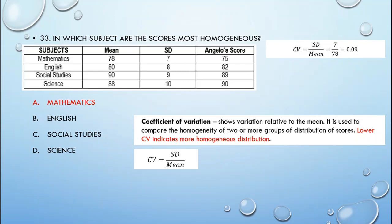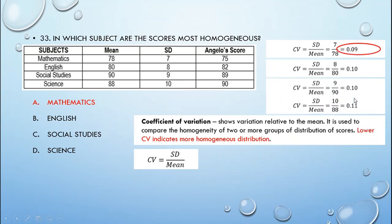Computing for the coefficient of variation in mathematics, we have standard deviation of 7 divided by the mean of 78 gives us 0.09. For English, that is 8 divided by 80, which gives us 0.1. For social studies, we have 9 divided by 90, which gives us also 0.1. And for science, the coefficient of variation is equivalent to 10 divided by 88, which is 0.1. Since this coefficient of variation is lowest in mathematics, which is equivalent to 0.09, that means the scores in mathematics is the most homogeneous among the subjects.